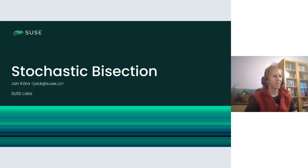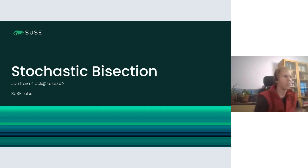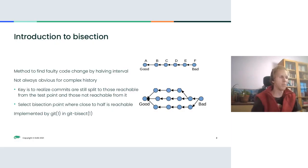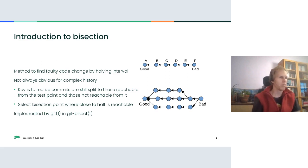So, stochastic bisection. First I will go through some details about what general bisection is, and then we will go more into stochastic bisection. This was actually my hack week project from the week before, and then last week I also somewhat improved it. Basically, what bisection is — everybody probably knows it with git.